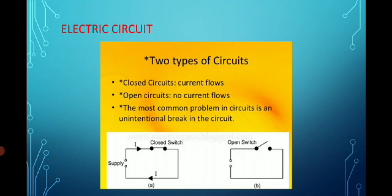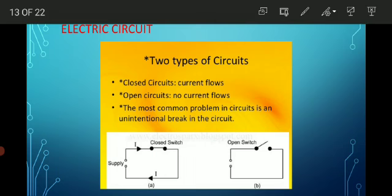Next is the electrical circuit. There are two types of circuits — open circuit and closed circuit. A closed circuit is one where current flows continuously. An open circuit is one where current does not flow.